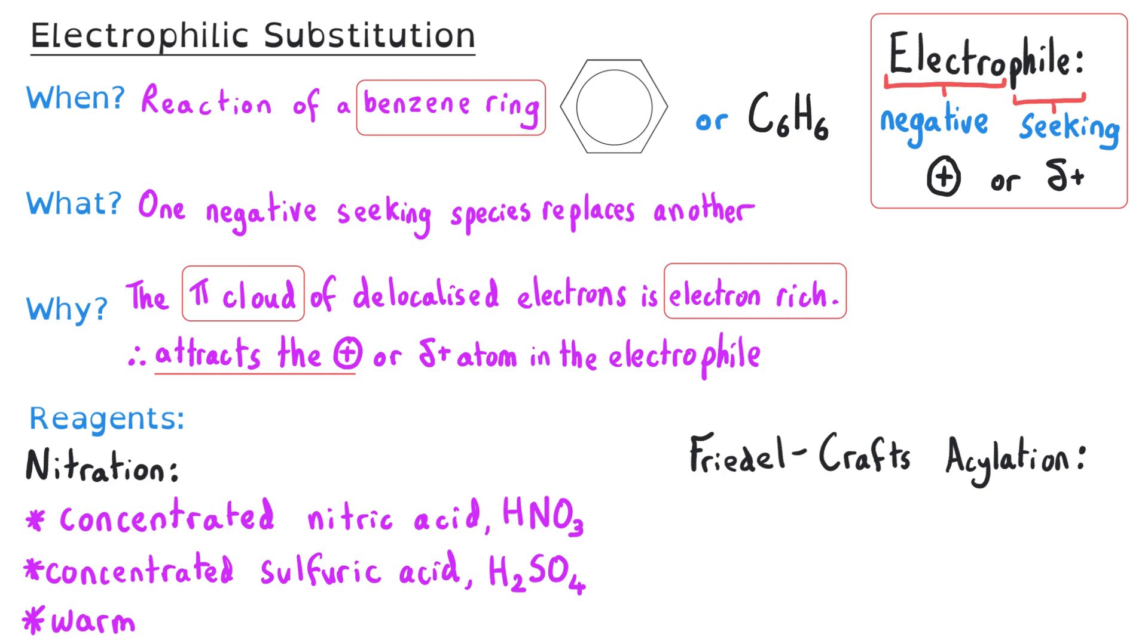There's also Friedel-Crafts acylation, and the electrophile comes from an acyl chloride, and we use an aluminium chloride catalyst. This reaction is very slow at room temperature, so we need to do this under reflux in the presence of a dry ether solvent. There are other choices, but it's really important that we have a non-aqueous solvent.